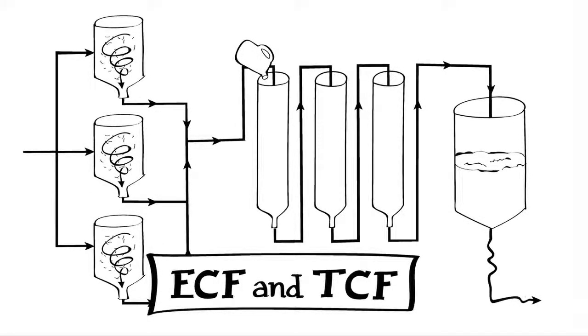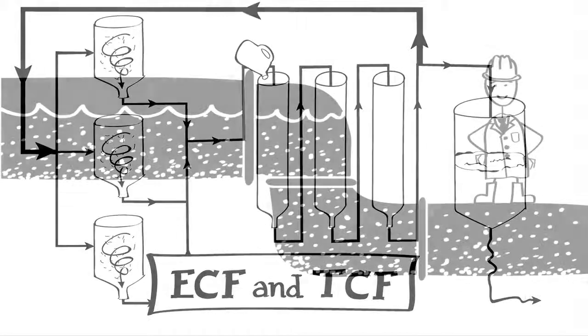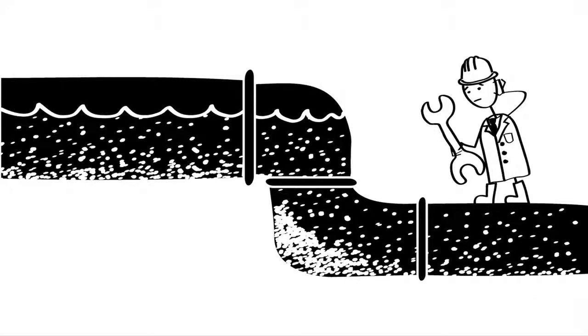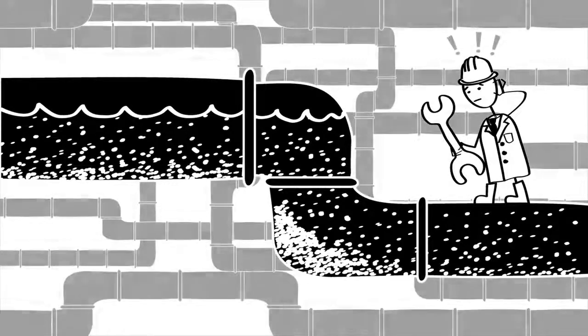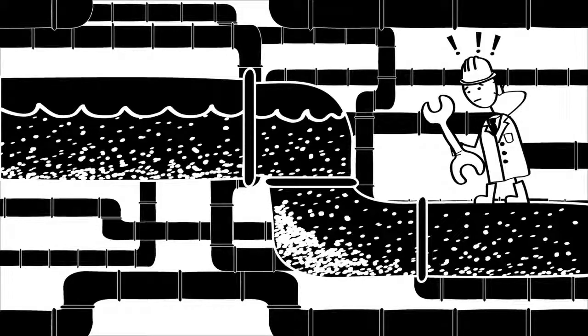It is possible to recover some of the filtrate or wastewater from the bleach plant so that it does not go to wastewater treatment. However, the degree to which this is possible is limited due to dissolved wood substances that are in these wastewaters, which can build up in the process and cause significant maintenance issues, additional volumes of filtrate to be processed, or other operational constraints.